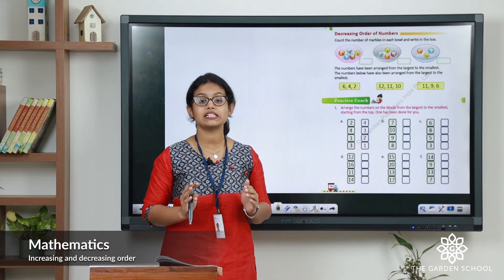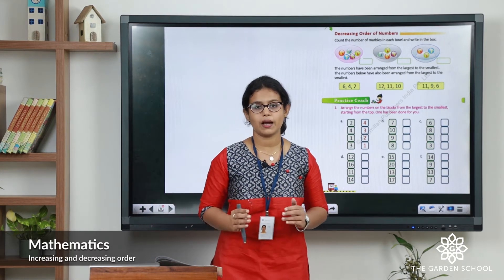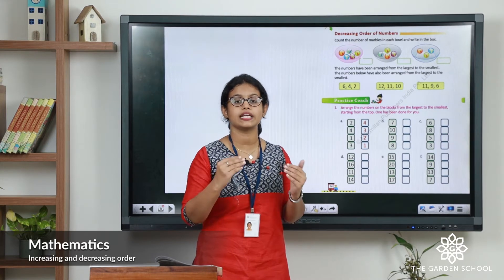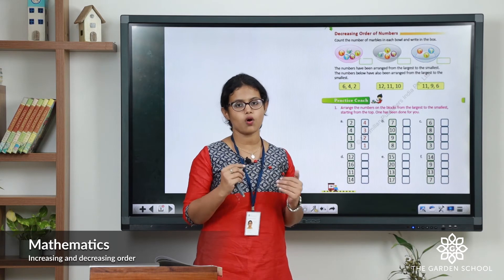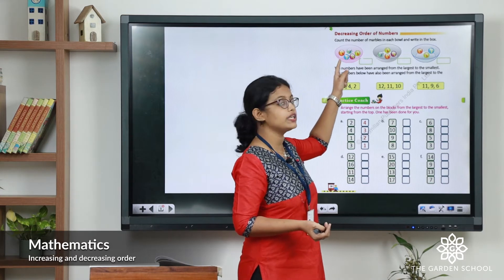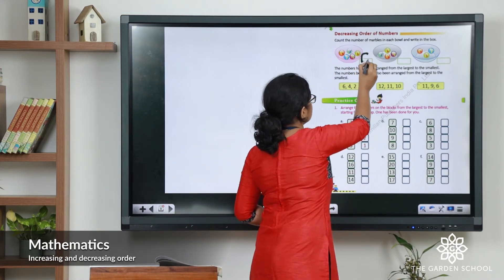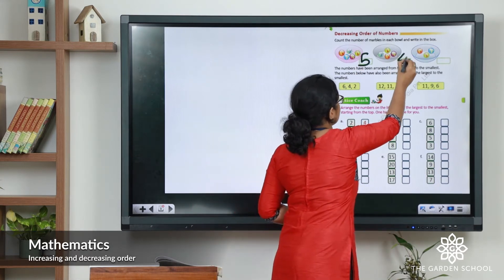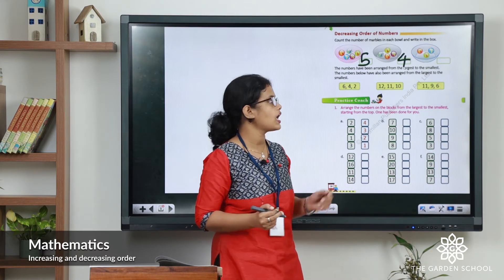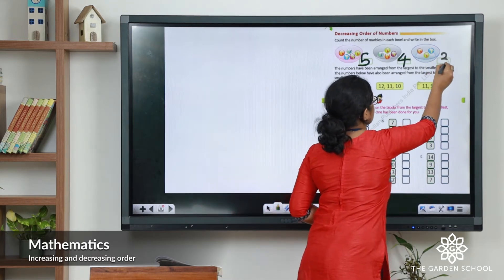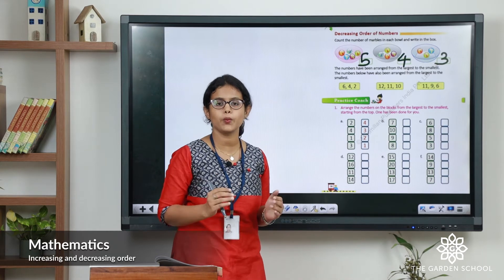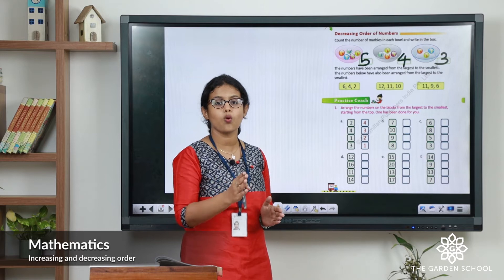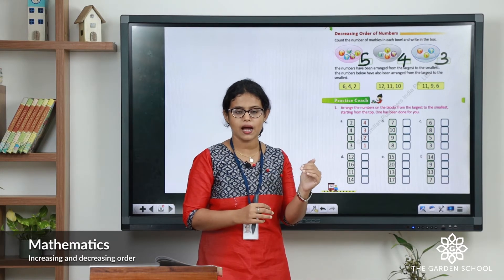Now you can open your textbook and take page number 26 — decreasing order of numbers. Here you can see three bowls and in each bowl there are some marbles. We will count the number of marbles in each bowl. First bowl: one, two, three, four, five — there are five marbles. Next bowl: one, two, three, four — there are four marbles. Last bowl: one, two, three — there are three marbles. So five, four, three — it is in decreasing order, from the largest number to the smallest number.